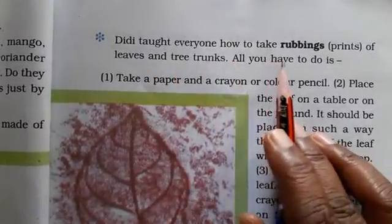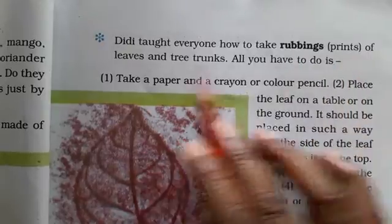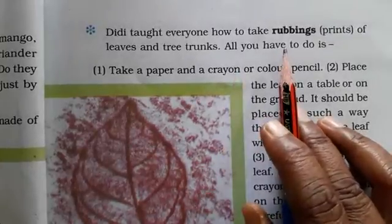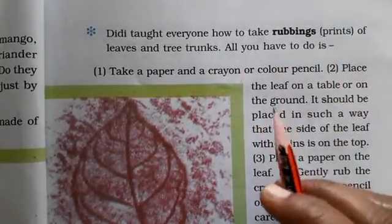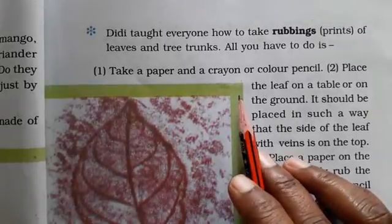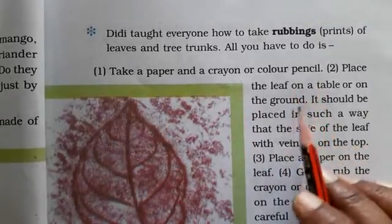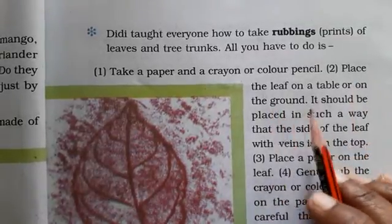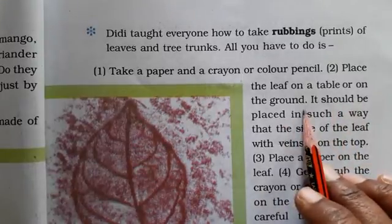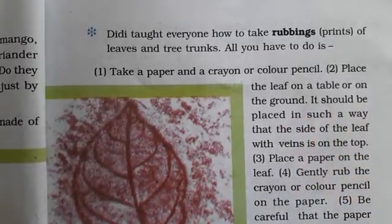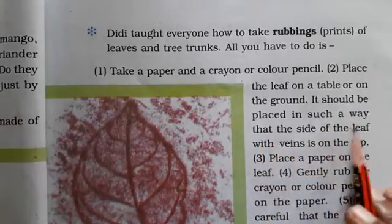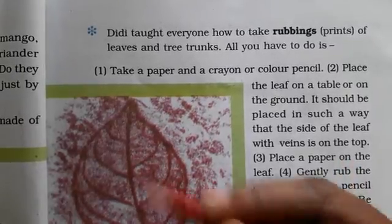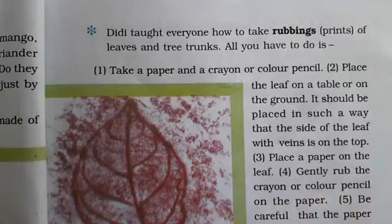Didi told everyone how to take rubbings of leaves and tree trunks, and you have to do it. Take a paper and crayon, place the leaf on the table or on the ground. The side of the leaf with veins should be facing up — the veins should be on top.